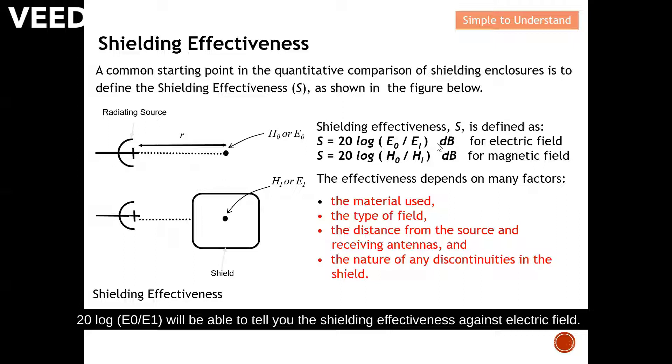In terms of shielding effectiveness for electric field, you compare E₀ without any shielding and E₁ with shielding. This 20 log E₀ over E₁ will tell you the shielding effectiveness against electric field. Same for magnetic field: 20 log H₀ over H₁ compares the shielding effectiveness against magnetic field.